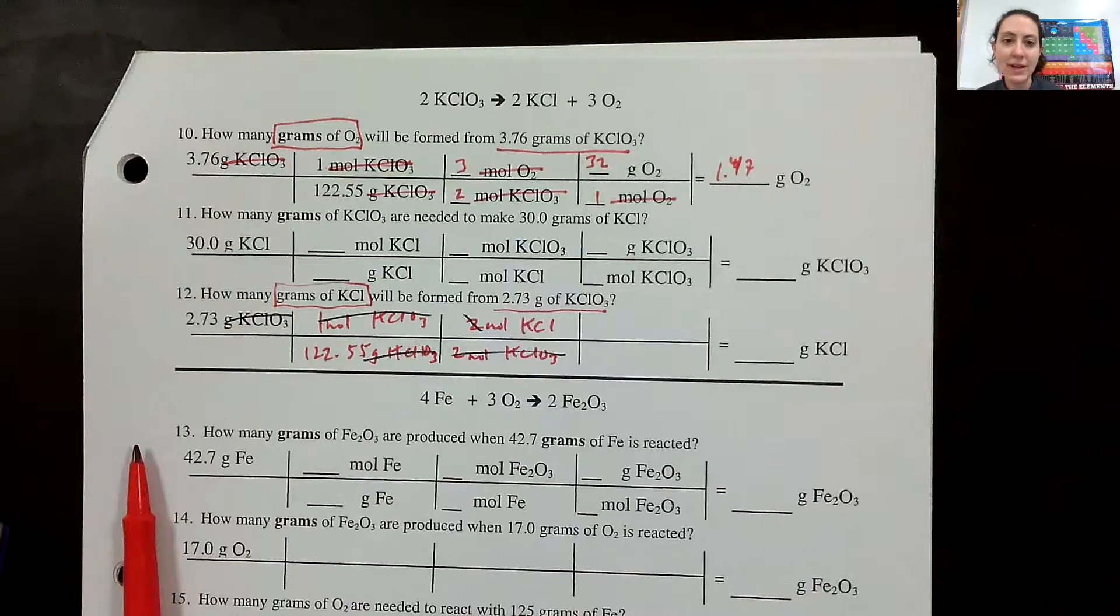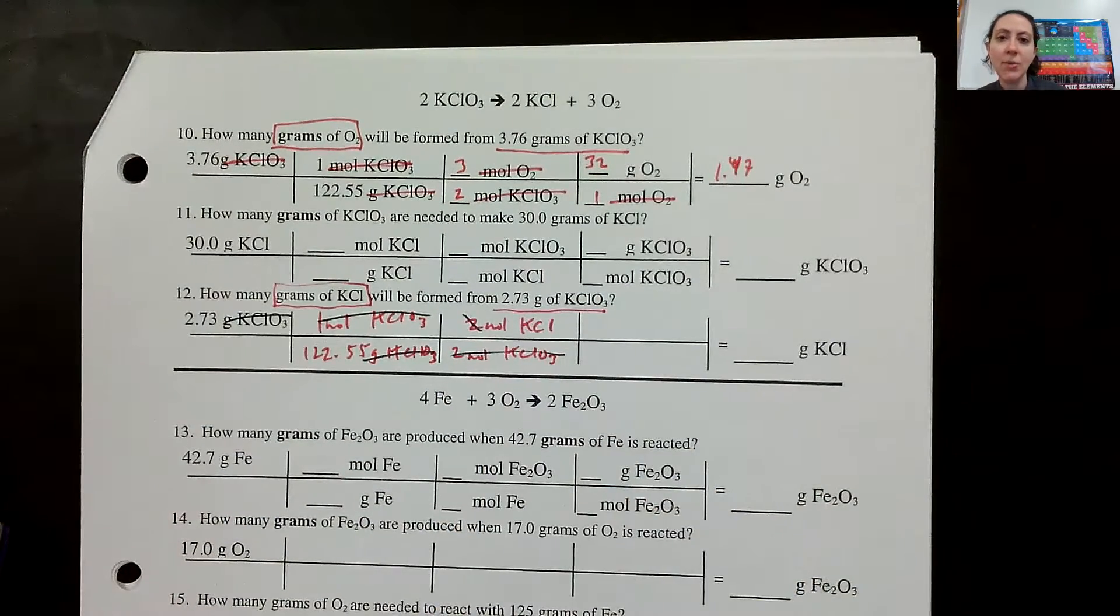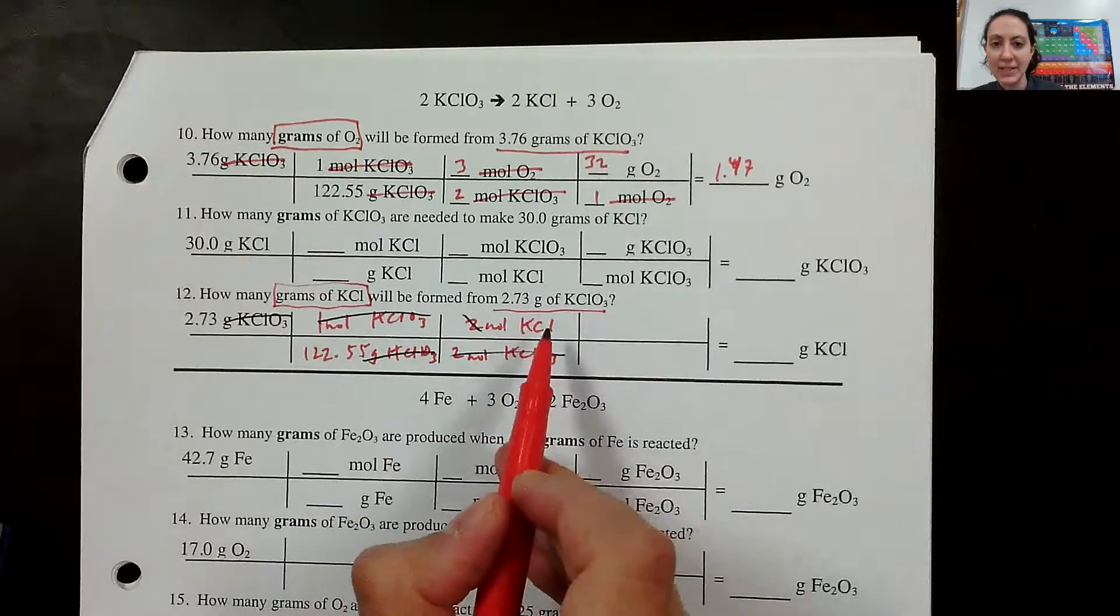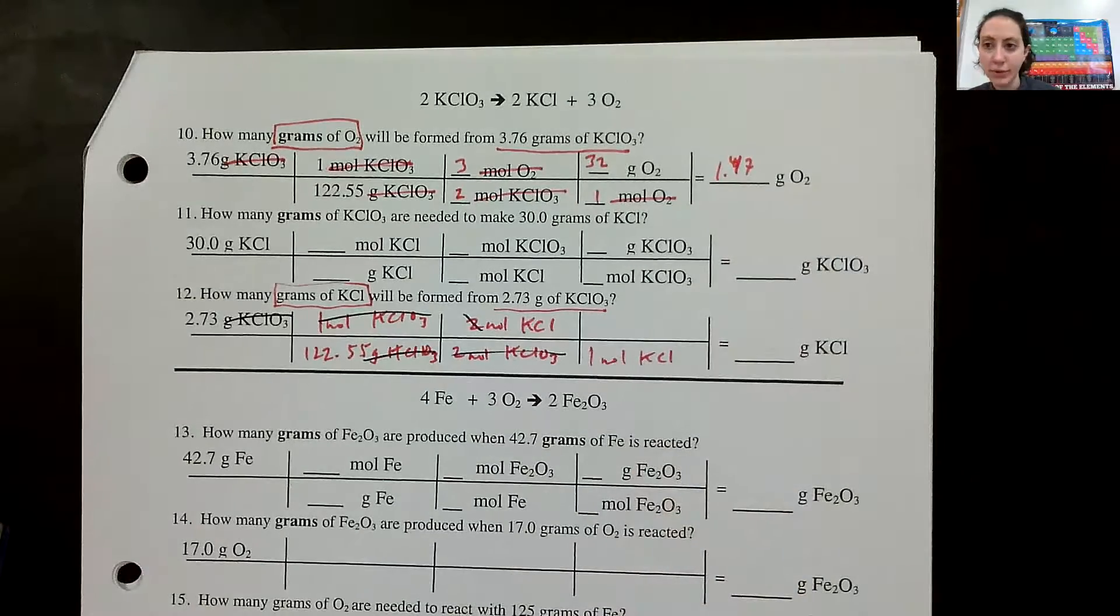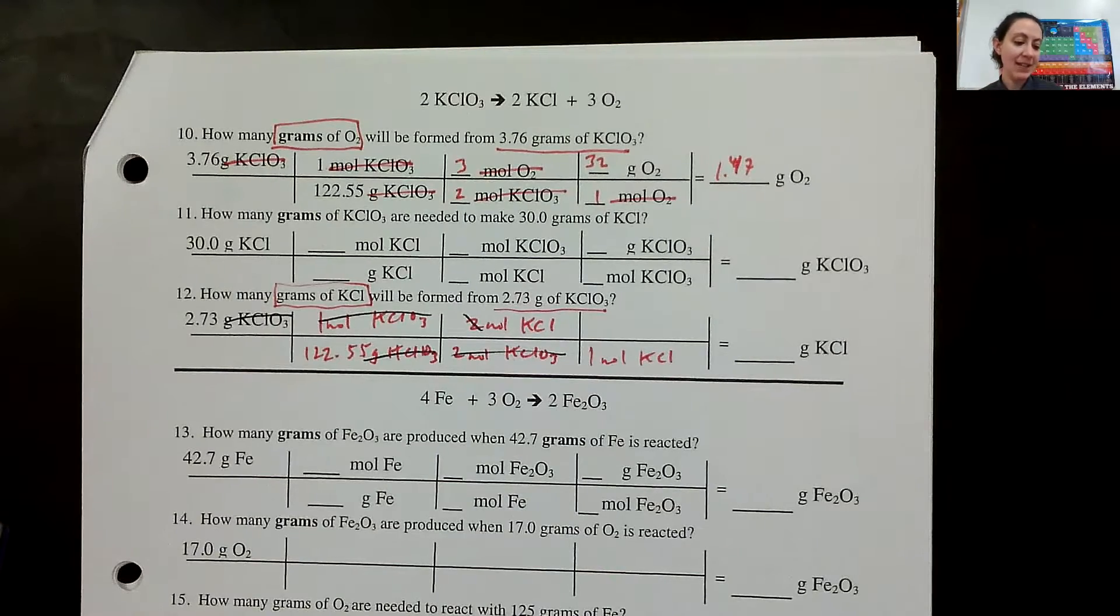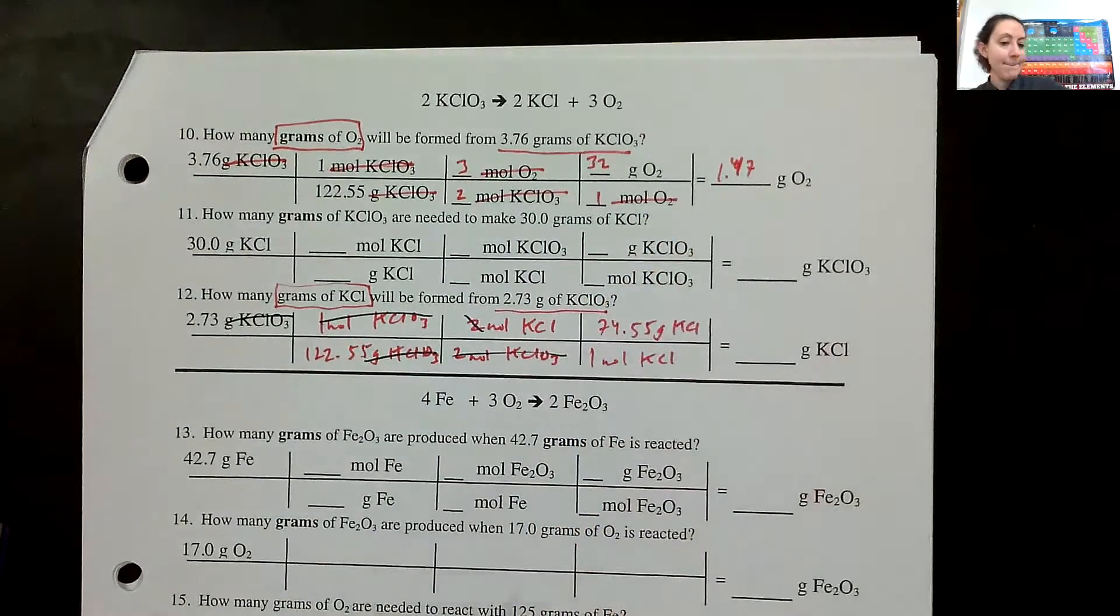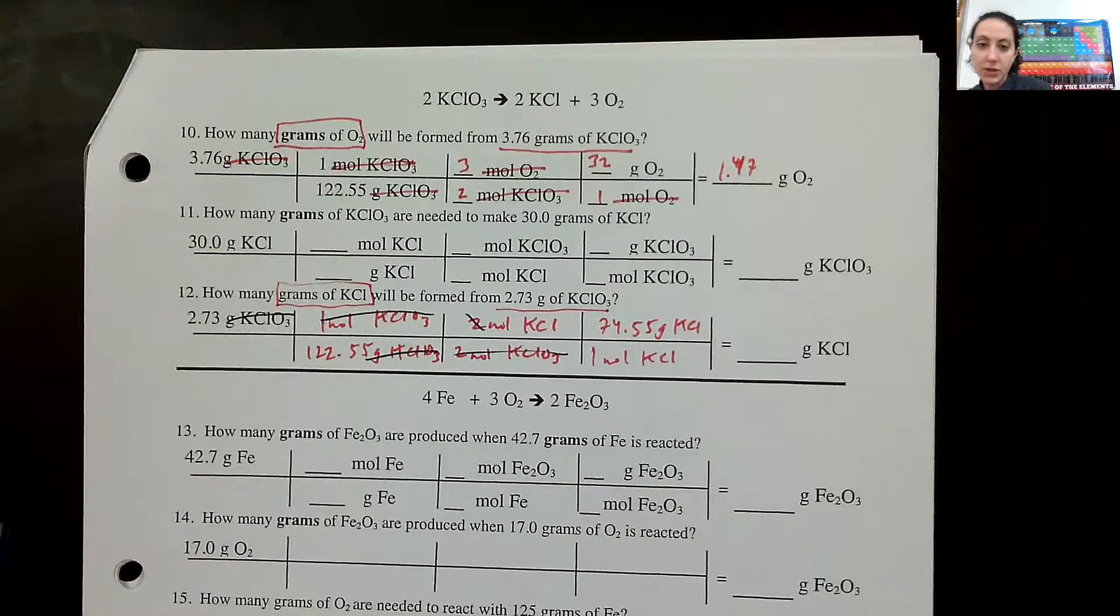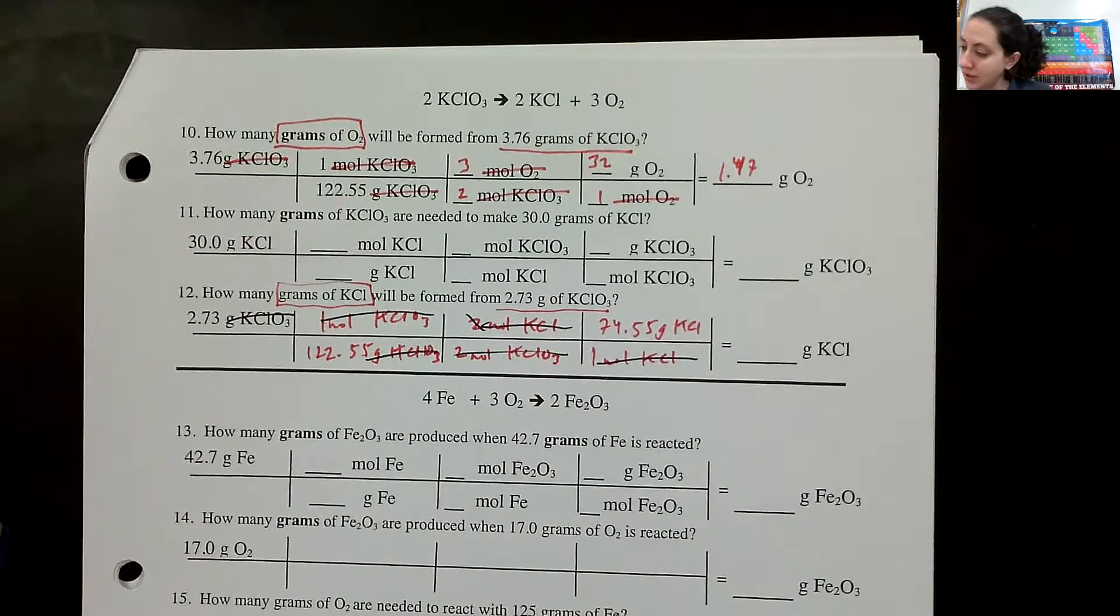And now we just need to get into the molar mass, converting moles of potassium chloride into grams of potassium chloride using molar mass. I don't know what that is, but let's just add it up real quick. Chlorine is 35.45, potassium is 39.1. So that's going to be 74.55 grams of potassium chloride. Moles over here cancel out, moles of potassium chloride. And we're left with grams of potassium chloride. So now we just need to do the math.